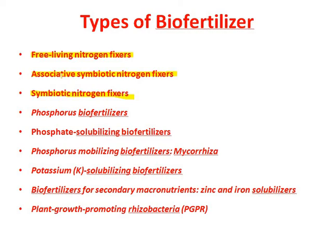For phosphorus biofertilizers, as mentioned, some microbes are solubilizing phosphorus and some are mobilizing it. There is also mycorrhiza — just one category — which we will discuss. Other nutrients can also be addressed: potassium solubilizing is important for plant growth. Some microbes also make zinc and iron available in solubilized form.